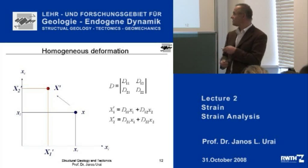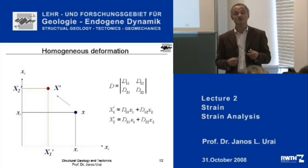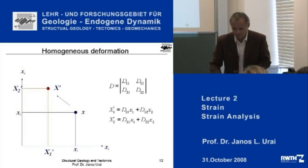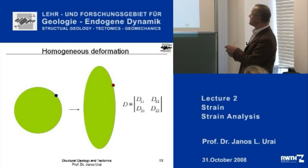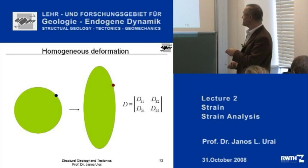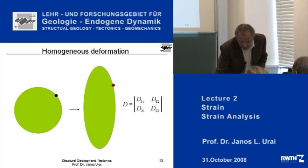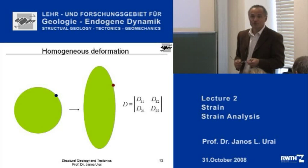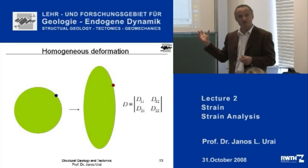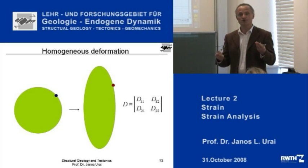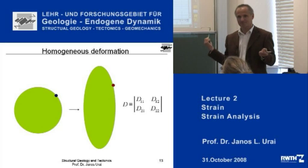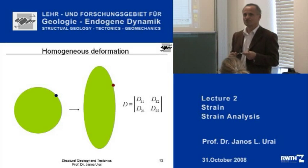I have shown you how to transform this point to a new location. I can of course transform a million points and then give you the new object. For example, if I take a circle and transform all the points on the circle, I get an ellipse. To illustrate this, we have a little computer program that I'm going to demonstrate to you. You can download it from our website and try out different parameters — it's very easy to learn. I would advise you very strongly to do that because in the exam you are going to get questions related to this.